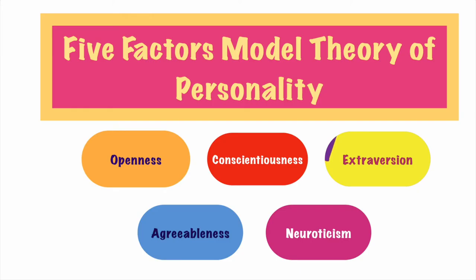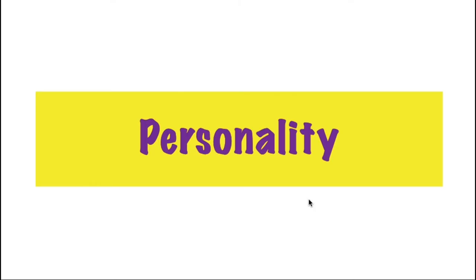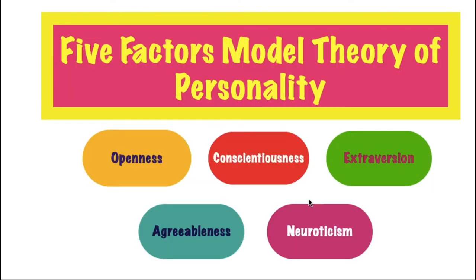In the trait approach, researchers worked to determine individual differences. The five-factor model took 16 factors and cut them short into five. This model is also known as the OCEAN model of personality, or by another acronym, CANOE. Its five dimensions are: Openness, Conscientiousness, Extraversion, Agreeableness, and Neuroticism.